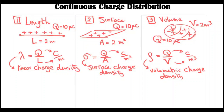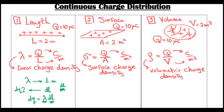Lambda, sigma, and rho are charge densities, not charge itself. Lambda is the charge present in one meter. So if you have a very small length element called delta-l and want to calculate the charge in it, you use cross multiplication: dq equals lambda times delta-l. To find the charge, you multiply lambda by the length. We deal with very small lengths because we can find the electric field due to very small elements, just like a point charge.